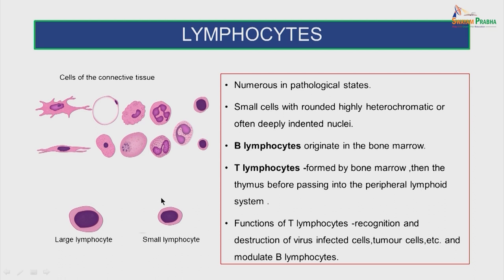Coming to lymphocytes, they are numerous in pathological states. They are small cells with rounded, highly heterochromatic or often deeply indented nuclei. The B lymphocytes originate in the bone marrow. The T lymphocytes are also formed in the bone marrow, then the thymus, before passing into the peripheral lymphoid system. The functions of T lymphocytes include recognition and destruction of virus-infected cells, tumor cells, etc., and they modulate the B lymphocytes.